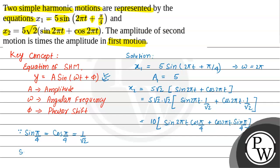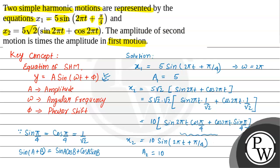Now we apply another trigonometric formula: sin(A + B) = sin A cos B + cos A sin B. We can see that our equation is in exactly this form. So we can write x2 = 10 × sin(2πt + π/4). Comparing with the general form, the amplitude a2 = 10. Comparing with the first equation's amplitude of 5, a2 = 2 × a1.